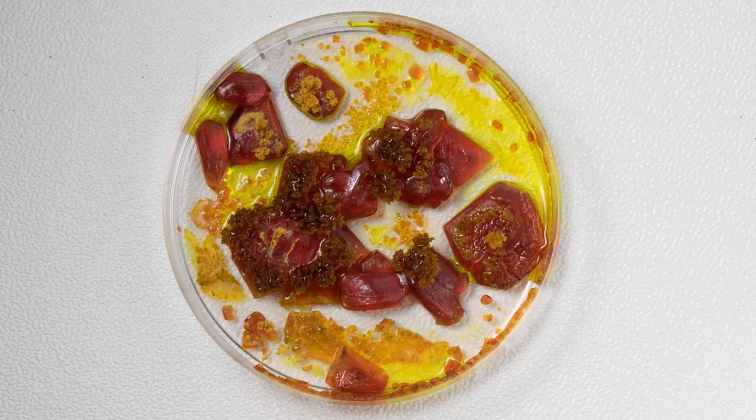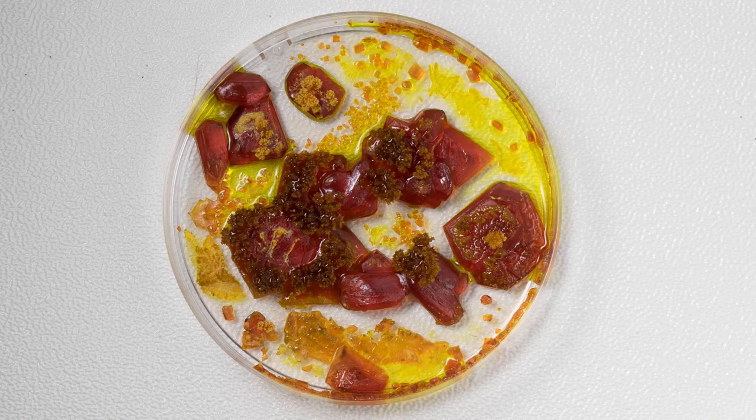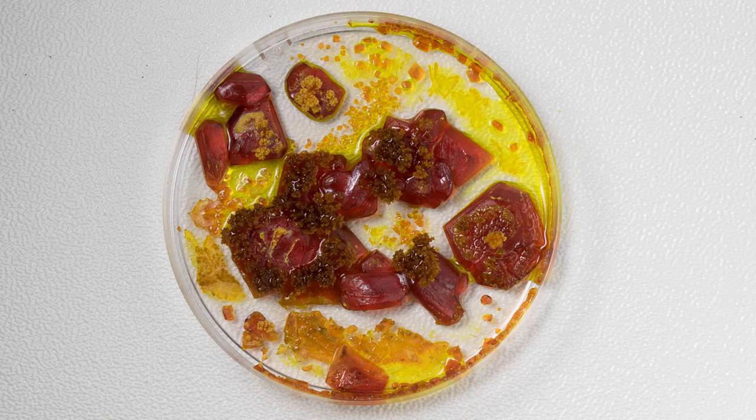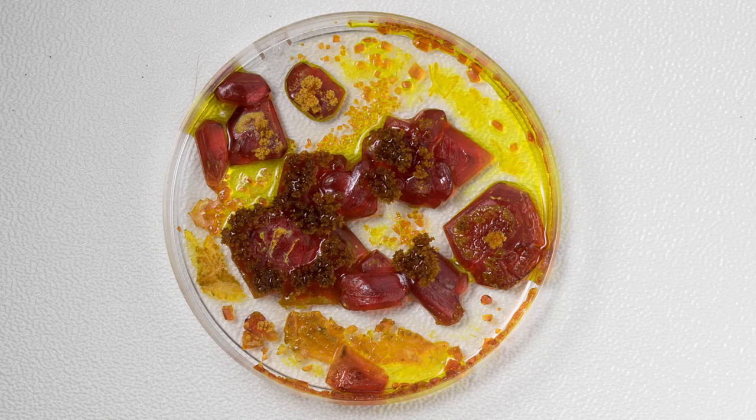Potassium hexacyanoferrate dissolves easily in hot water. However, as you know, water evaporates over time and the solution cannot hold all of the dissolved red prussiate of potash anymore. That's why it precipitates out of the solution, forming beautiful red crystals.